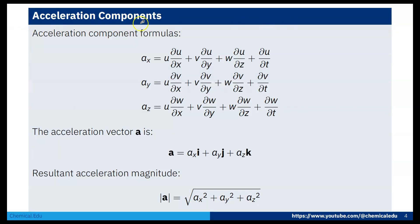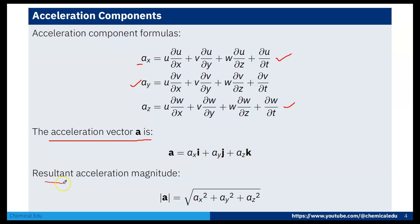Now for the acceleration components: ax = u·∂u/∂x + v·∂u/∂y + w·∂u/∂z + ∂u/∂t; ay = u·∂v/∂x + v·∂v/∂y + w·∂v/∂z + ∂v/∂t; az = u·∂w/∂x + v·∂w/∂y + w·∂w/∂z + ∂w/∂t. The acceleration vector is a = ax·i + ay·j + az·k, with magnitude = √(ax² + ay² + az²).